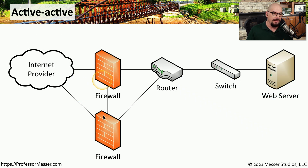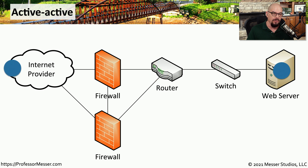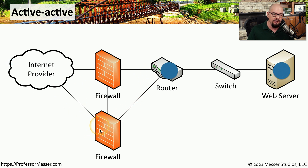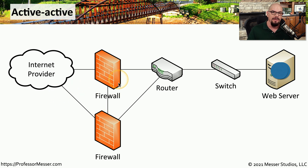With an active-active configuration, both firewalls are always on and always available. So traffic may pass through one firewall on its way to the web server, and other traffic may pass through the other firewall on the way to the web server. We need to configure these firewalls to recognize that traffic may flow in any direction at any time, and make sure the configurations are properly synchronized between those devices.